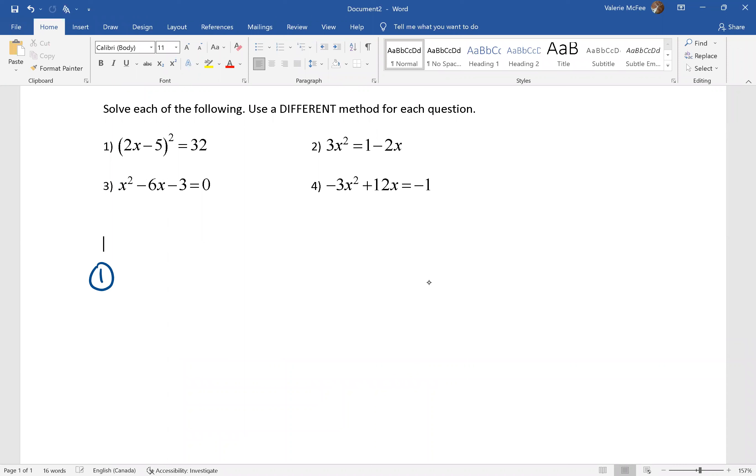So we said for question one, we would use the square root method. You know, of course, you can simplify the square root of 32. And I'm going to add five to both sides.